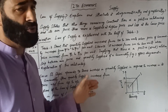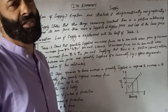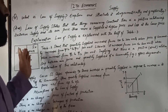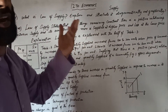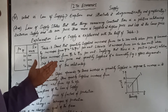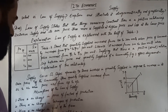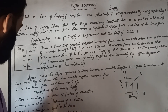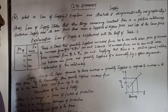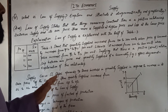Assumption four: there is no change in the price of related goods. For example, when we talk about the price of wheat, the related goods would be rice — so there is no change in the price of related goods, that is PR. Assumption five: there is no change in business expectations. So business expectations may not be updated. This is all about the law of supply.